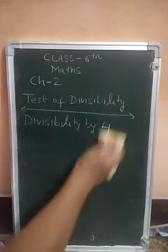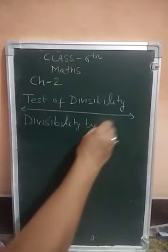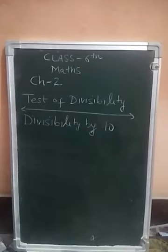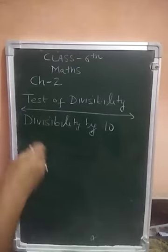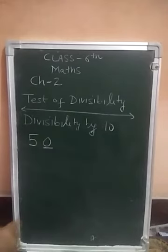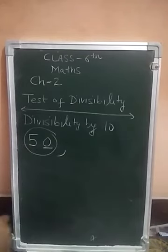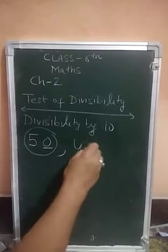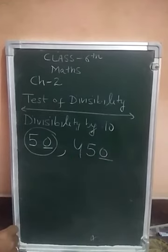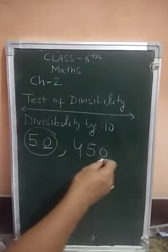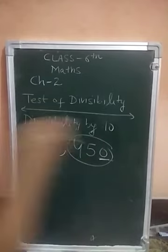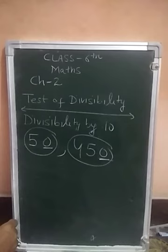Now we will check divisibility by 10. A number is divisible by 10 if the digit at 1's place is 0. For example, 50 has 0 at 1's place, so it is divisible by 10. Any number which ends with 0 is always divisible by 10. For 450, the 1's place is 0, so it is also divisible by 10. Divisibility by 10 is very easy — just check whether the number ends with 0.